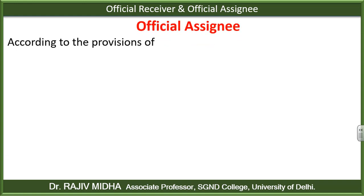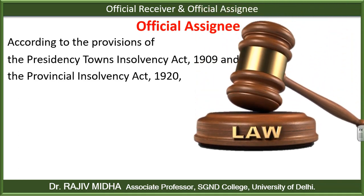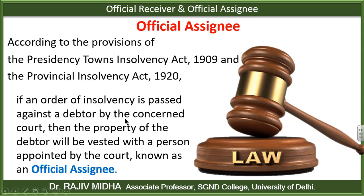First of all, let's talk about Official Assignee. According to the provisions of the Presidency Town Insolvency Act 1909 and the Provincial Insolvency Act 1920, if an order of insolvency is passed against a debtor by the concerned court, then the property of that debtor will be vested with the person appointed by the court, known as an Official Assignee.